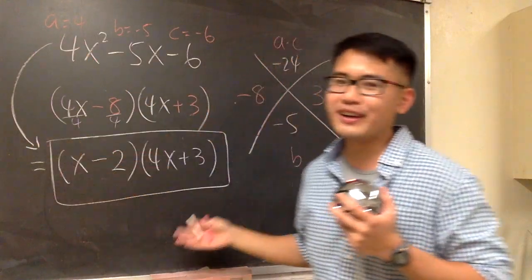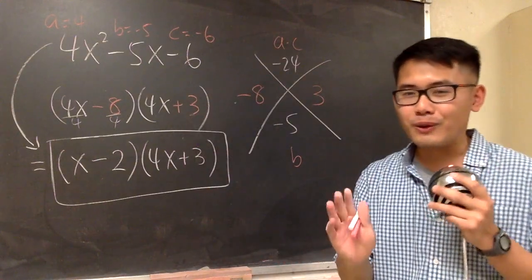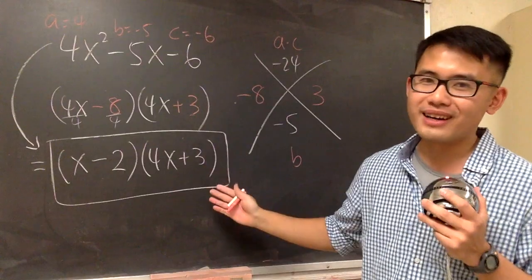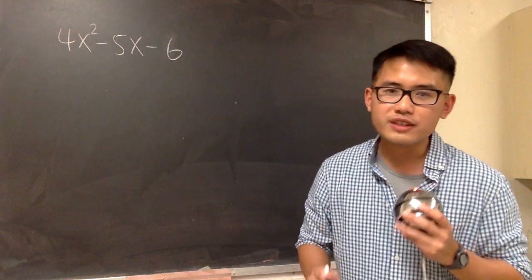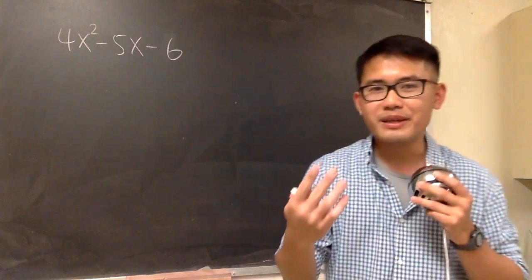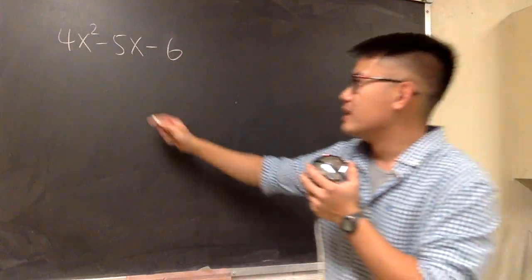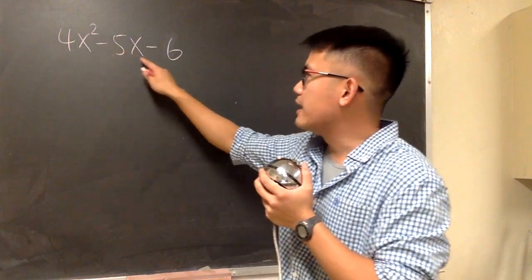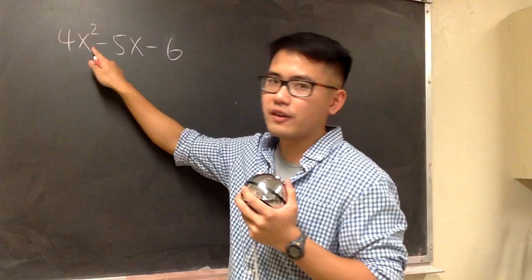The final answer is (x minus 2)(4x plus 3), same as before. That's the lazier version where you didn't need to do the grouping step. For the third method, it's called slide and divide. Thanks to Professor Churchill, who showed me how this method works. We still have 4x squared minus 5x minus 6, and the hard part is that 4 in front of the x squared.